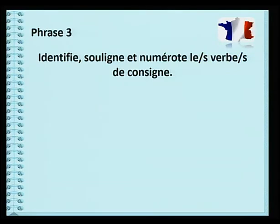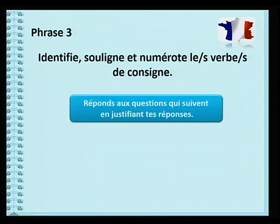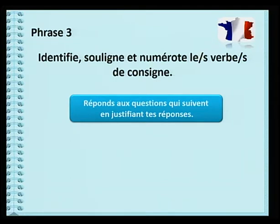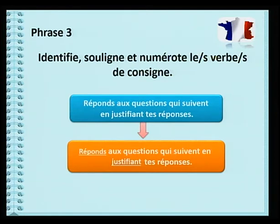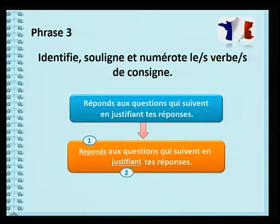Troisième phrase: «Réponds aux questions qui suivent en justifiant tes réponses.» Quels sont les verbes de consigne? Les verbes de consigne sont «réponds» et «justifiant». Et les deux tâches sont dans le bon ordre. Tu devras répondre aux questions, et aussi justifier tes réponses, c'est-à-dire, donner des raisons pour lesquelles tu as choisi d'écrire ces réponses-là.